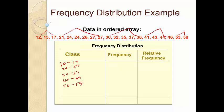The class width is 10 — take the lower limit of the first class and subtract it from the lower limit of the next class. Now count the values: there are 3 in the 10s, 6 in the 20s, 5 in the 30s, 4 in the 40s, and 2 in the 50s. Summing up: 3, 9, 14, 18, 20 — sums to 20, so we're good.